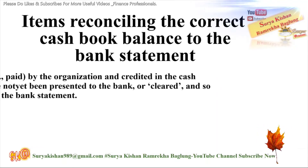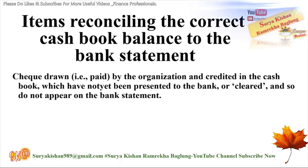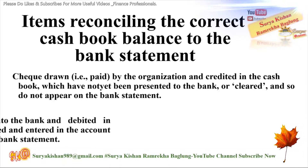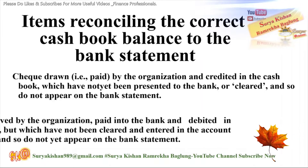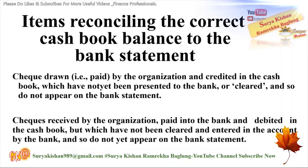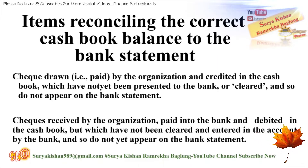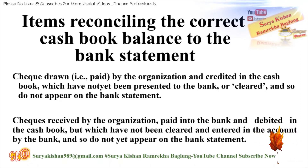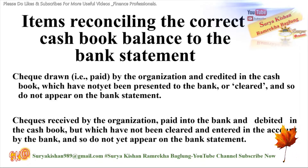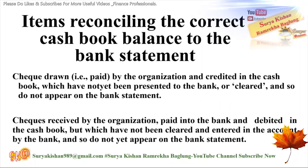Items reconciling the correct cash book balance to the bank statement include: checks drawn and paid by the organization and credited in the cash book, which have not yet been presented to the bank or cleared, and so do not appear on the bank statement; and checks received by the organization, paid into the bank and debited in the cash book, but which have not been cleared and entered by the bank, and so do not yet appear on the bank statement.